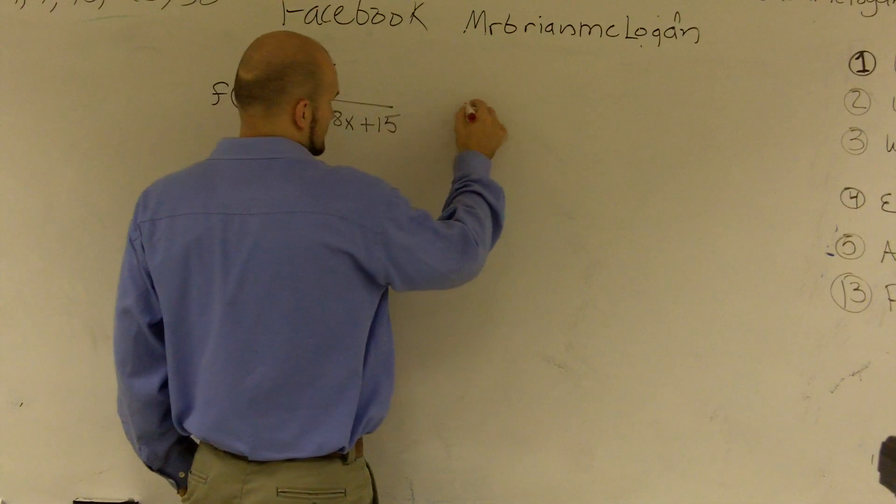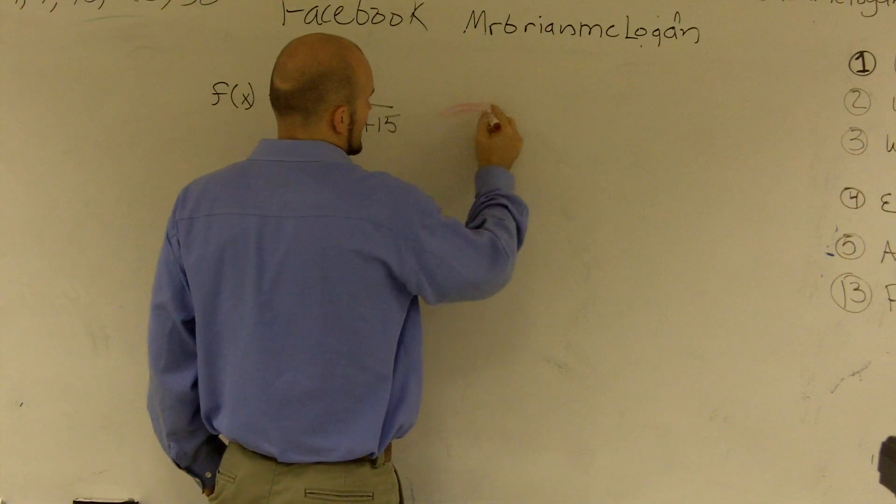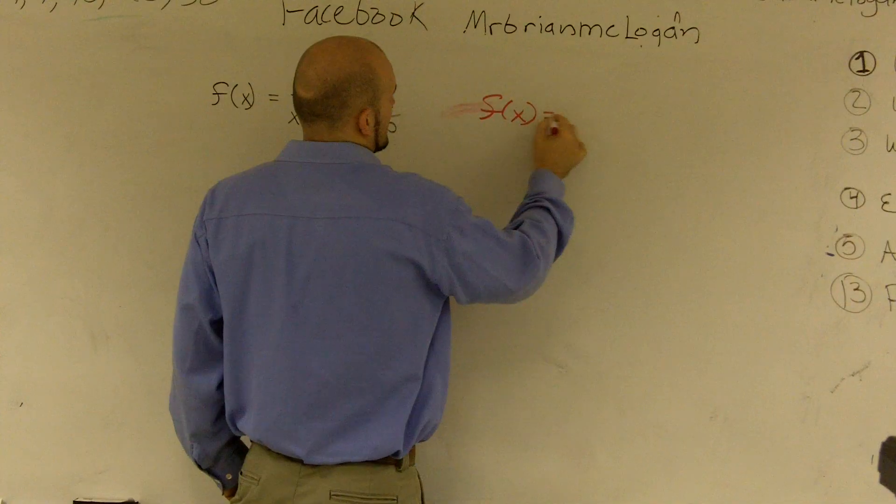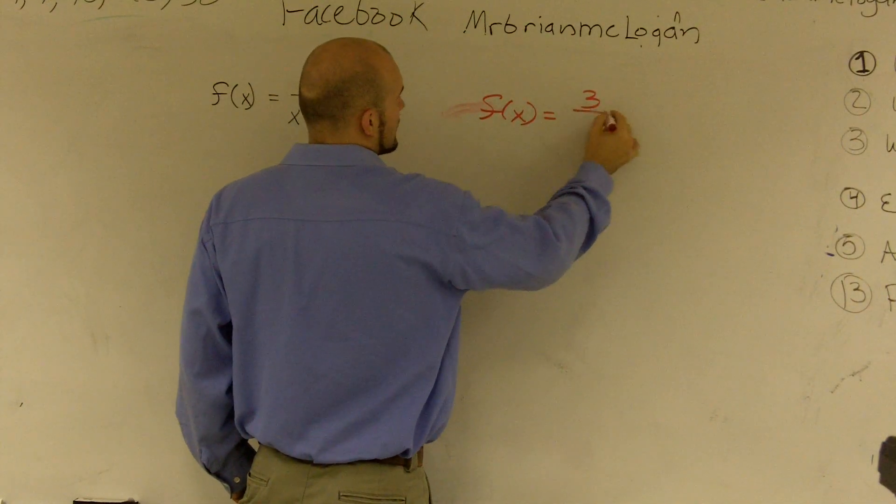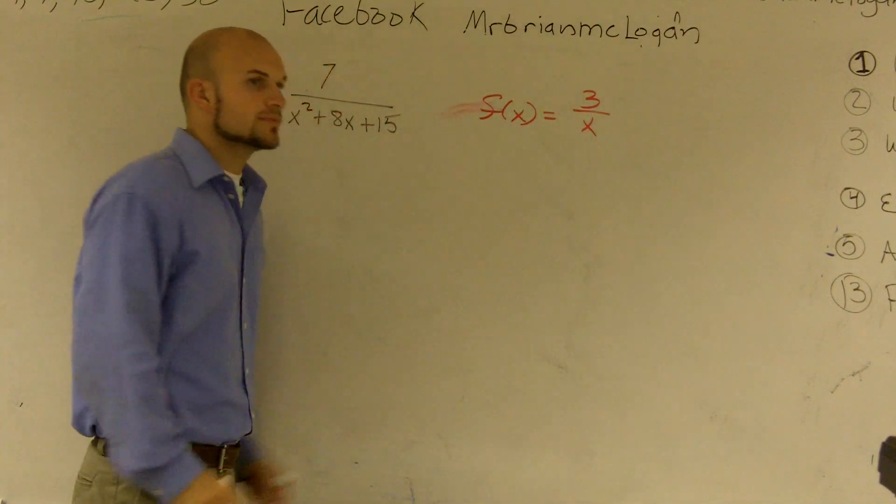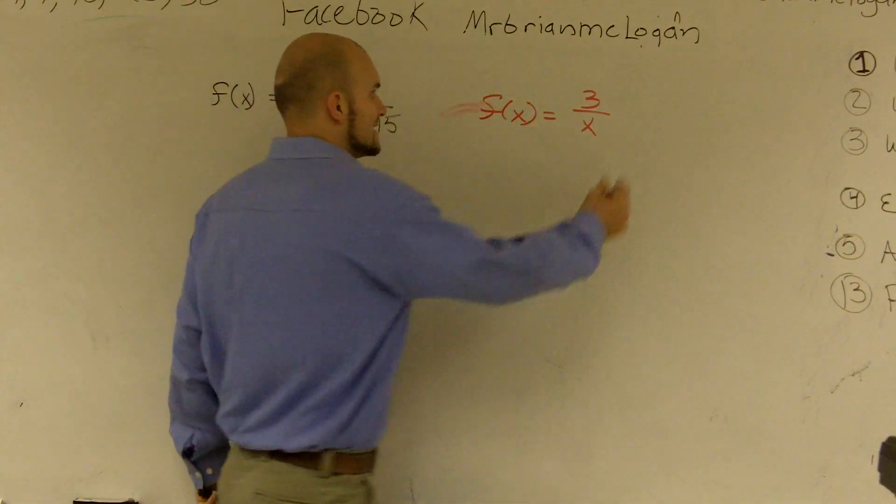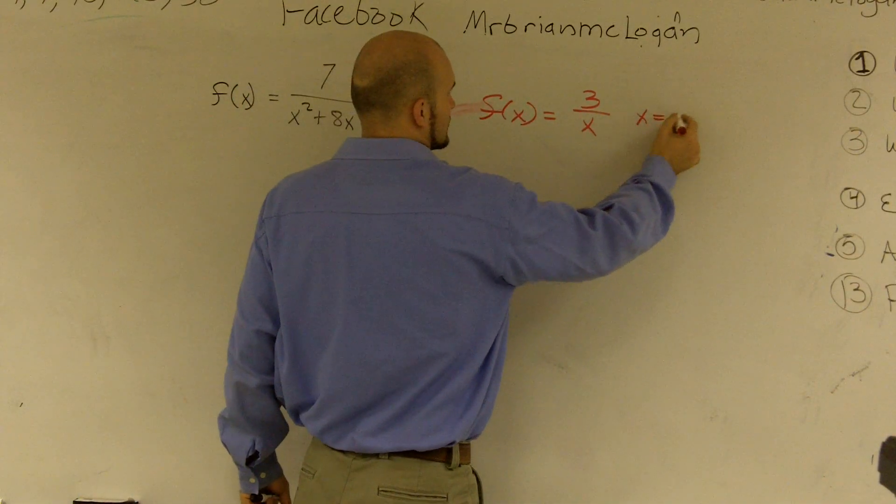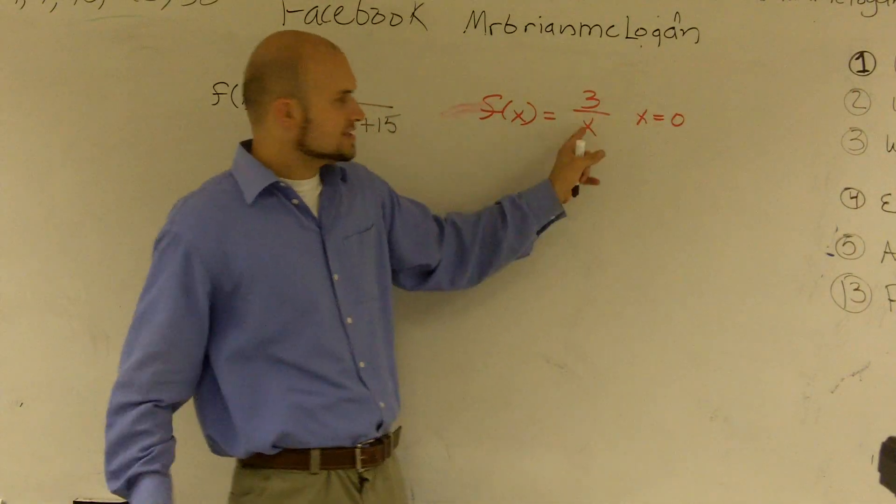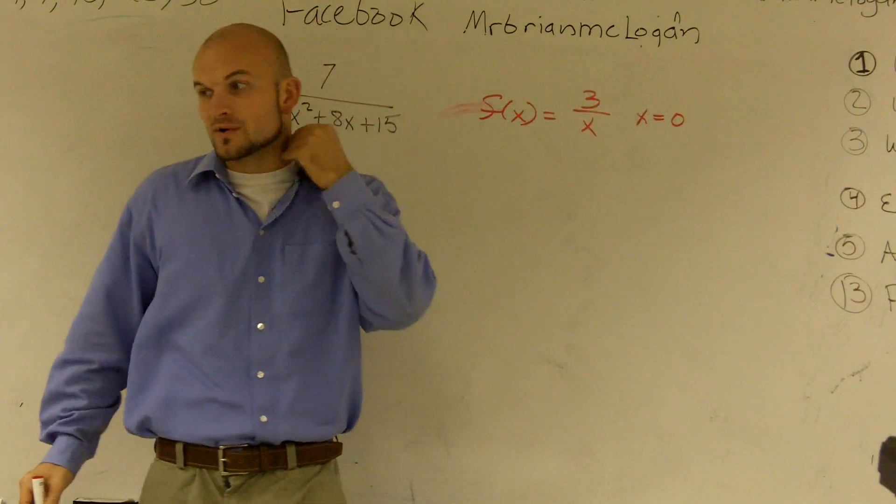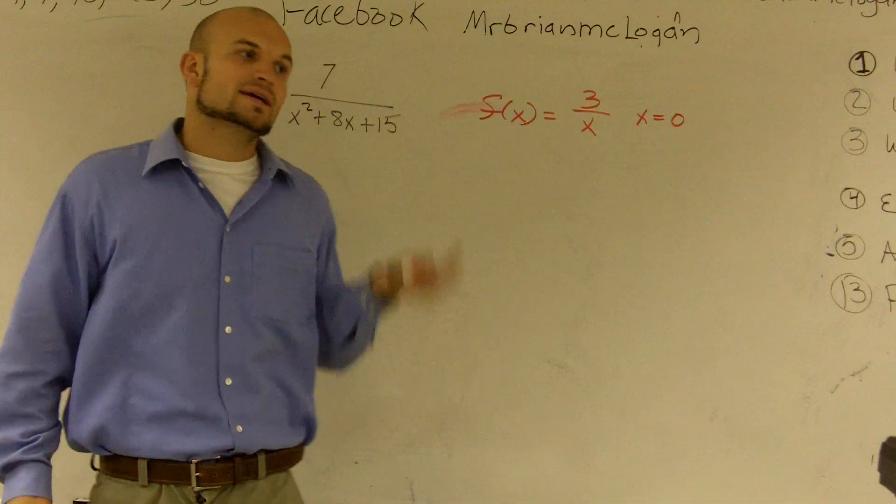For instance, let's just say I had f of x, and if I did 3 over x, well, the only value that this does not work for is when x is equal to 0. Because when x equals 0, I have 3 divided by 0, and you cannot divide 0 into a number.